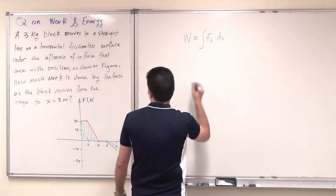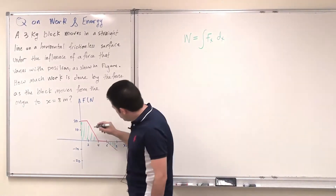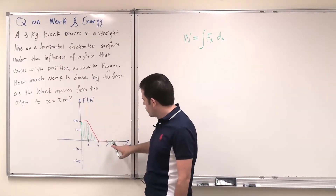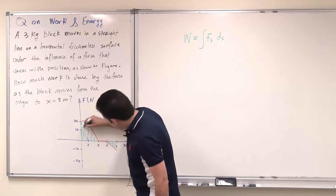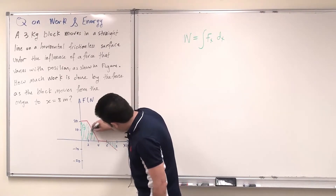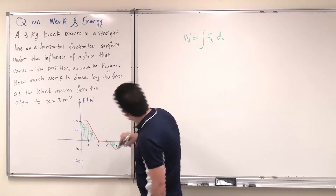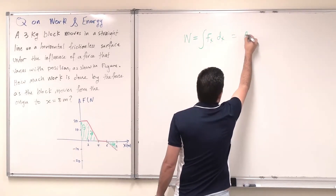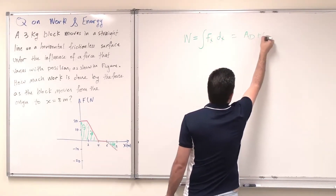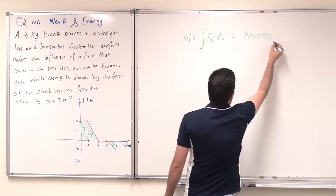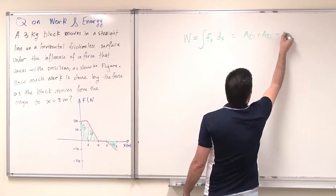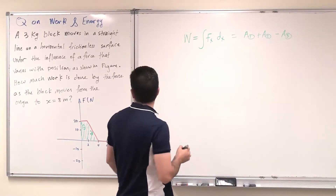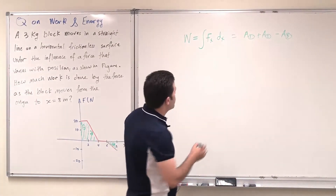To simplify the problem, I will divide those areas into one, two, and three. So I have area one, two, and three. Work equals area one plus area two, minus area three, because it is a negative area. This will be the total work done by this varying force.